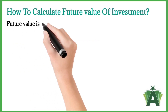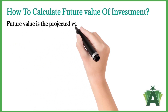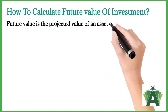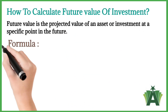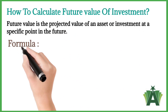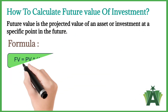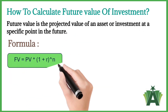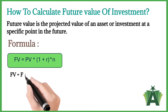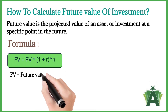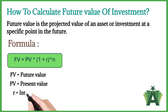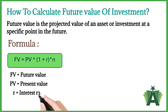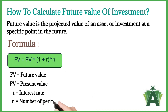Future value is the projected value of an asset or investment at a specific point in the future. The basic formula to calculate future value is: FV equals future value, PV equals present value, R equals interest rate, and N equals number of periods.